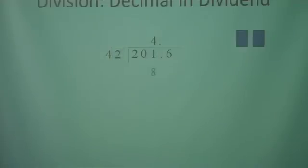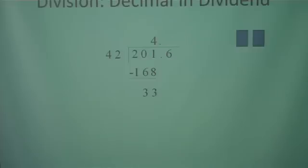4 times 2 is 8, and 4 times 4 is 16. When you subtract, you get 33. Since 33 is less than 42, 4 was a good estimate. We have one more number to bring down, so let's bring down our 6.